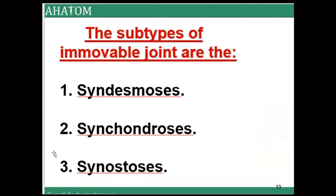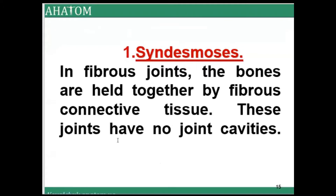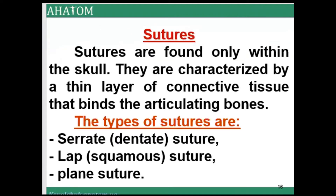The subtypes of immovable joints are syndesmosis, synchondrosis, and synostosis. The types of syndesmosis are sutures, ligaments, interosseous membrane, and gomphosis. In a fibrous joint, the bones are held together by fibrous connective tissue. These joints have no joint cavity — remember this important point.